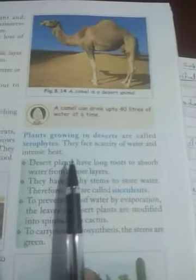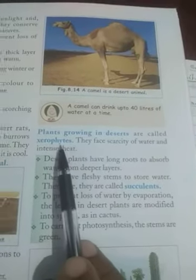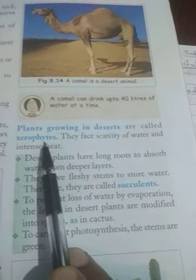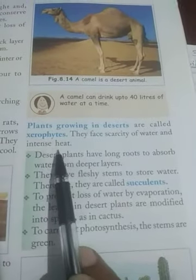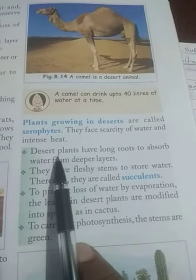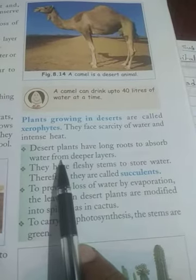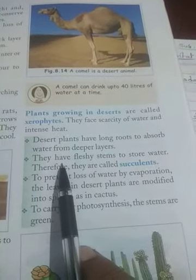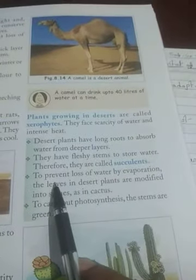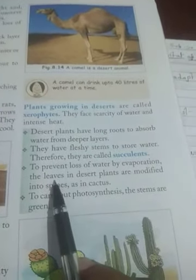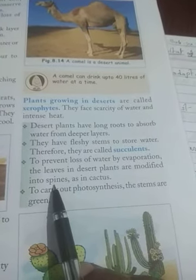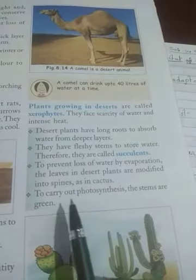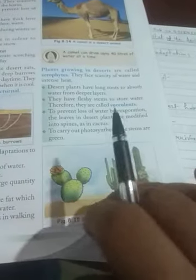Various types of plants are also present in the desert area. These plants are called xerophytes. They face the scarcity of water and intense heat. Desert plants have long roots to absorb water from deeper layers. They have fleshy stems to store water. To prevent loss of water by evaporation, the leaves in desert plants are modified into spines, as in cactus. To carry out photosynthesis, the stems are green. These are the most important adaptations and special features in plants and animals that live in the desert area.